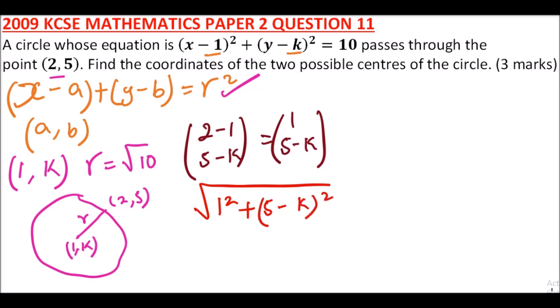that is the magnitude, should be equal to the radius which is the square root of 10. So once we can get this, you can square both sides. We'll be left with 1 + (5 - k)² = 10 after squaring.